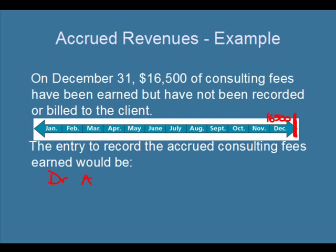The journal entry to record an accrued revenue would be a debit to accounts receivable for $16,500 and a credit to consulting fees earned for $16,500. We debit accounts receivable because we're expecting the customer to pay us for those revenues, and we credit consulting fees earned because we've done all of the work. We've completed everything we need to do to earn those revenues for the customer.